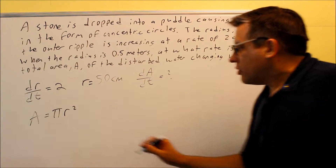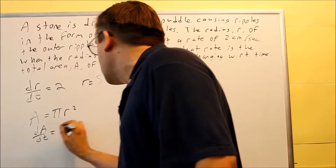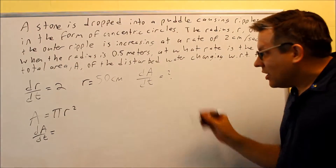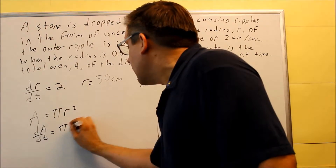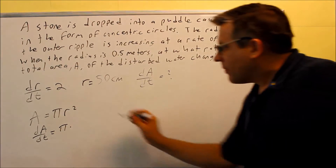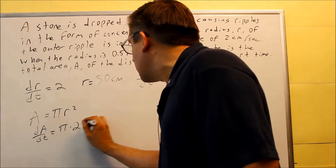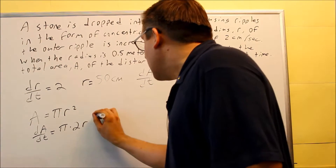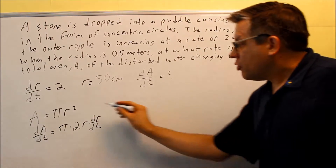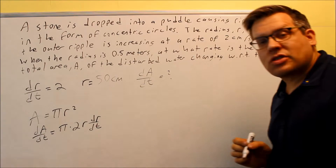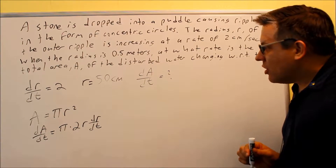Let's do that right now. The derivative of the left-hand side is just going to be dA/dt — that's what we're trying to solve for. Then we have π, and I'm going to multiply it by the derivative of r squared. This is going to involve the chain rule: 2 comes down front, we have r, and then don't forget the chain rule — derivative of the outside, then derivative of the inside is dr/dt.